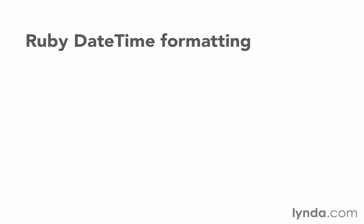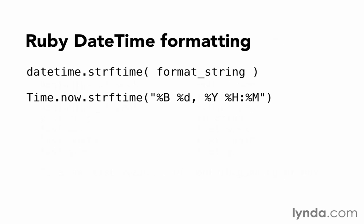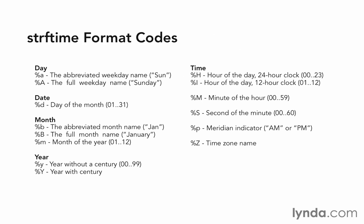Ruby also offers some basic datetime formatting by using the method called strftime. You can pronounce that as 'string from time', 'string for time', or 'string formatted time'. What you pass as an argument to it is going to be a format string. In my example, you see a format string with percent signs as placeholders for the month, day, year, hour, and minute. Each of those symbols that represent the placeholders is called a format code. These are a standard set of format codes that exist across a number of programming languages, not just Ruby. You can pause the video if you need to look for a specific format code to help you write a format string.